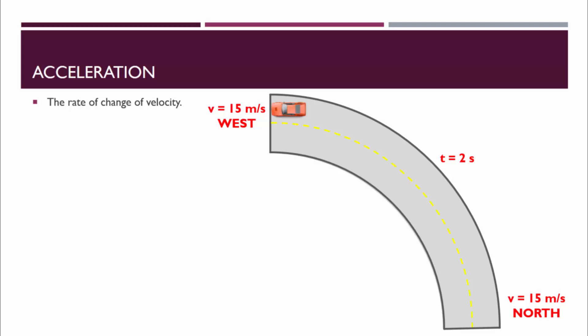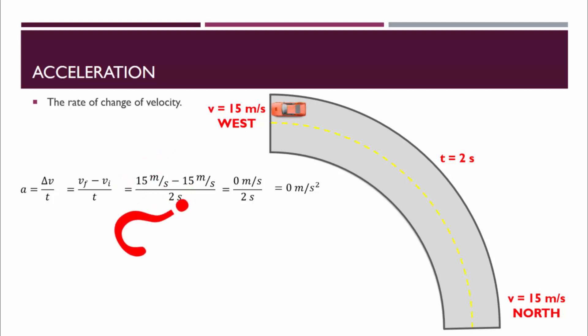Let's try to calculate the acceleration. A equals delta v over t. We plug in our initial and our final velocities and our time, and we get an acceleration of zero. But the velocity did change, so it was accelerating.